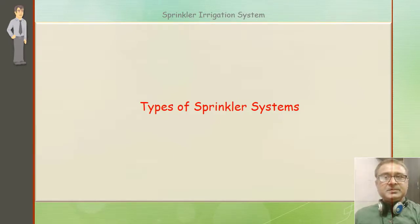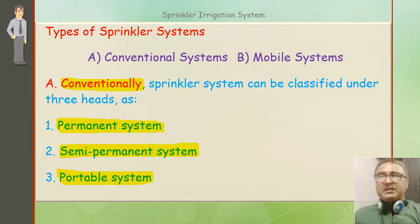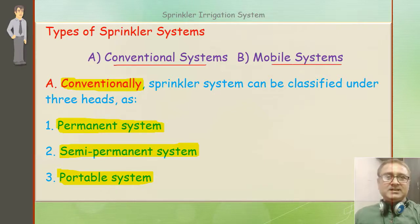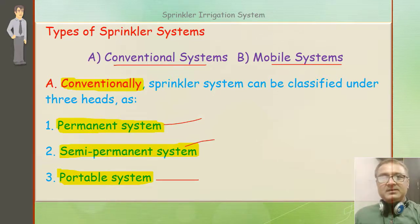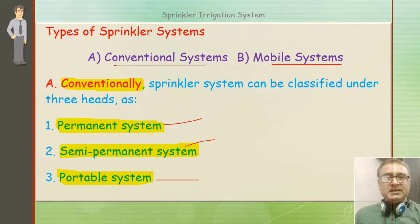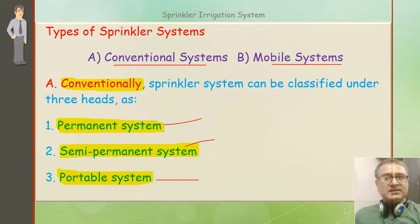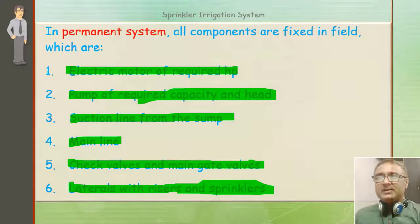Types of sprinkler systems: We can categorize them as conventional system or mobile system. Mobile system आगे तीन तरह के होते हैं। Conventional system में — it can be a permanent system, it can be a semi-permanent system, or it can be a portable system. Permanent means fixed रहे जगह पे, semi-permanent में कुछ portion fixed है कुछ move करता है, portable system पूरा complete system portable है। In a permanent system, all the components are fixed in the field।